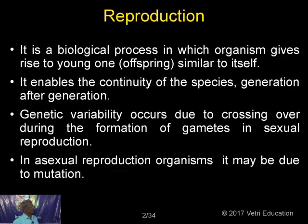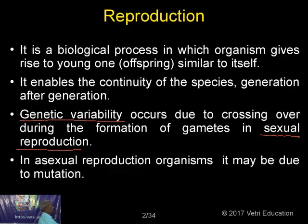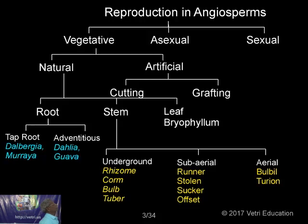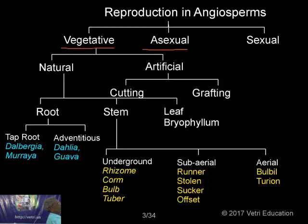Genetic variability occurs due to crossing over during the formation of gametes in sexual reproduction. So genetic variability is the key word for sexual reproduction. Whereas in asexual reproduction, variation will occur due to mutation. Reproduction is divided into vegetative, asexual, and sexual.